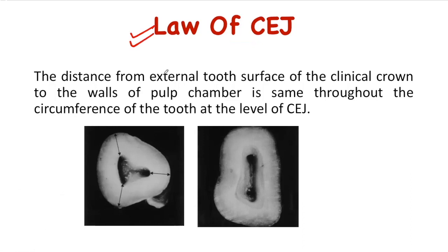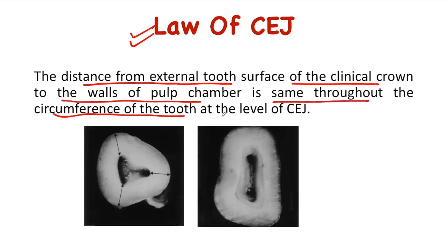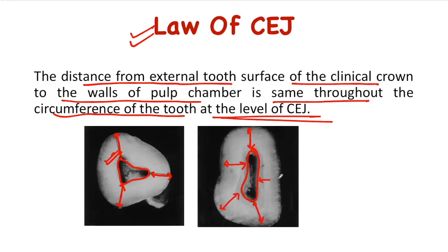The third law is the law of CEJ, or law of cemento-enamel junction. It states that the distance from the external tooth surface of the clinical crown to the walls of the pulp chamber is the same throughout the circumference of the tooth at the level of CEJ. As you can see here, this distance is almost equal all around the circumference of the tooth at the level of the cemento-enamel junction.